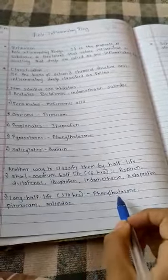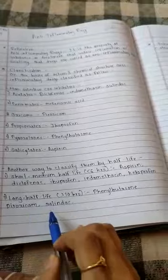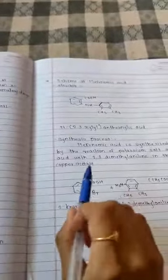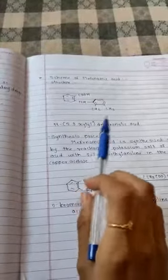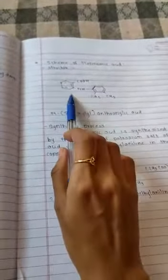In anti-inflammatory drugs, there is a scheme of mefenamic acid. The structure of ibuprofen, same name is N-2,3-xylyl anthranilic acid.